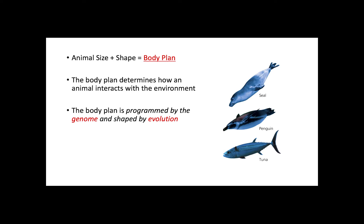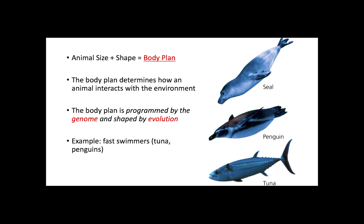But how does the environment help in shaping a body plan? Let's look at the aquatic environment and the fast swimmers, such as tuna and penguins. Water is a denser and more viscous substance when compared to air, making it more difficult for animals to move. However, certain species like tuna can reach swimming speeds up to 50 miles per hour because of their fusiform shape. Convergent evolution is responsible for giving this specific shape to most fast swimmers.